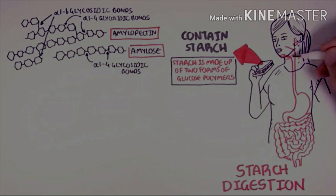Suppose a human is eating a sandwich. Bread contains starch. Starch is made up of two forms of glucose polymers: amylose and amylopectin. Amylose is a linear chain of glucose linked together by alpha-1,4 glycosidic bonds. Amylopectin has both linear chains and branches, so two types of bonds are present in amylopectin.